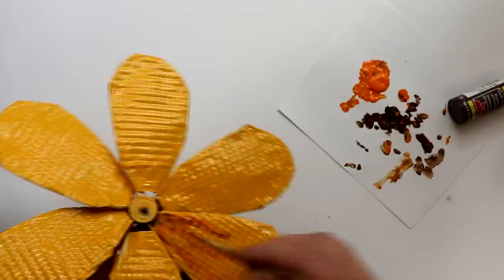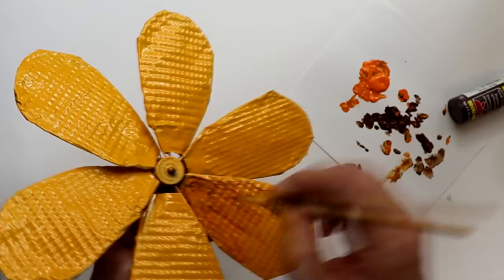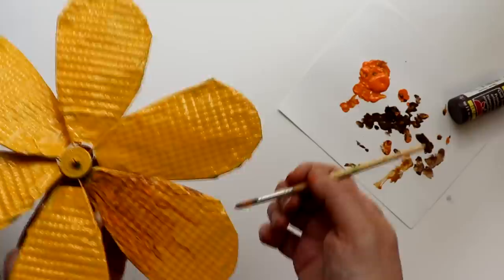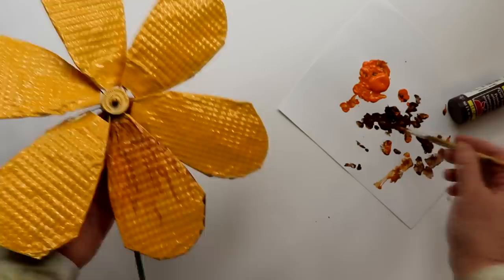So kind of just streaking the two together to create that multi-dimensional petal look. I'll go between the two colors mixing and matching and creating streaks and shadows with the two shades. Then I'll go back with the brown paint, dip my brush in there and then just accent the edges of each petal. Then I'll repeat the process for each of the petals.